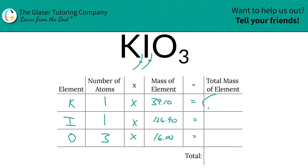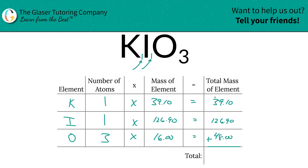Find the total mass of each element by multiplying across each row. The total mass of potassium is 39.10, iodine is 126.90, and oxygen is 48. Then to find the total mass of the entire compound, simply add the column up — easy as pie. That works out to be 214.